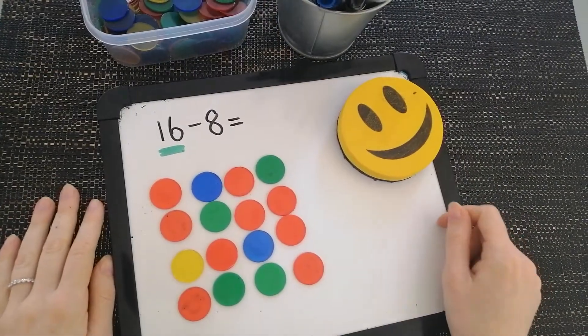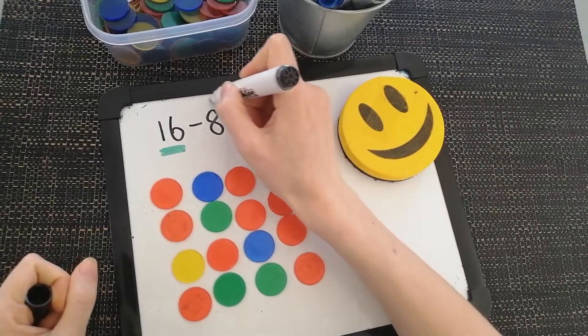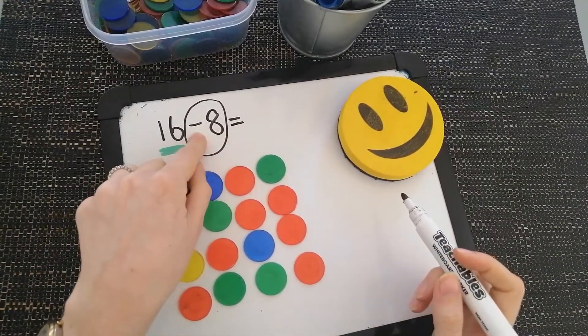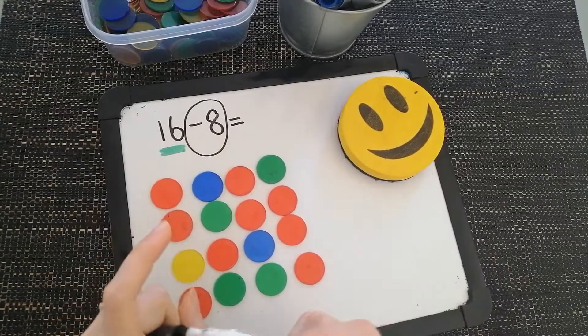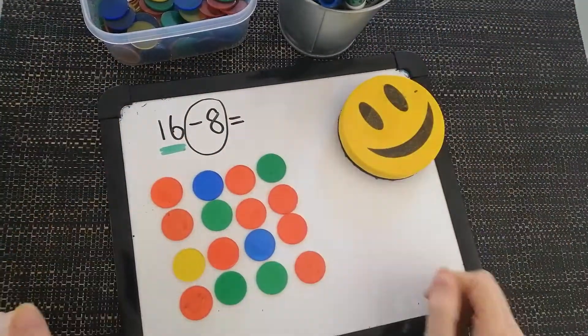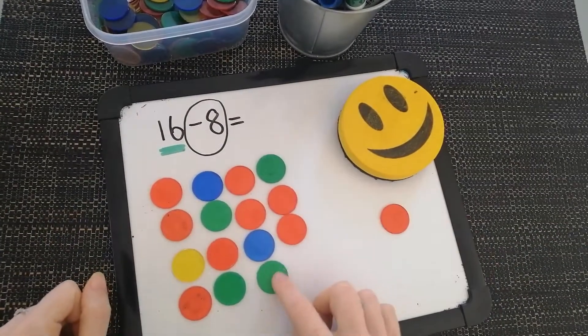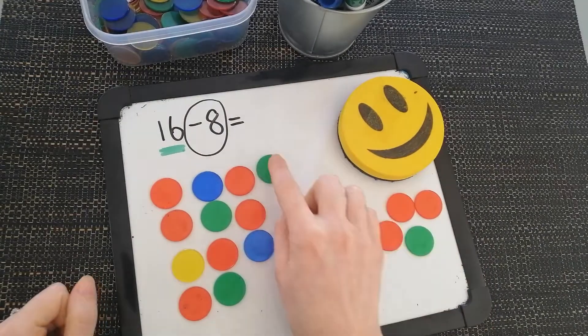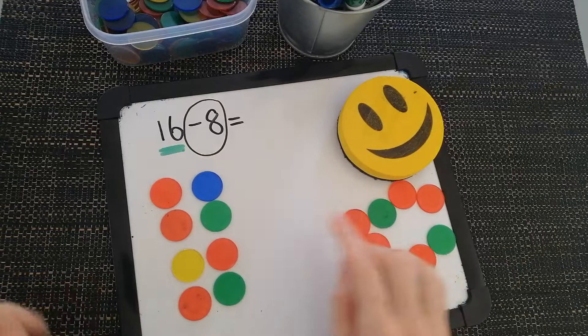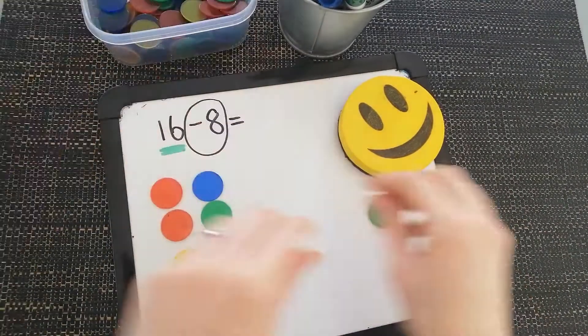All right, I have my 16 counters. The next thing I need to do is I need to take away 8, the number after the subtraction symbol, after the minus symbol. I need to take away 8 and put them away. They're no longer welcome here. They need to get out. 1, 2, 3, 4, 5, 6, 7, 8. And I'm going to pick them up so I don't get confused. Pick them up and put them away.